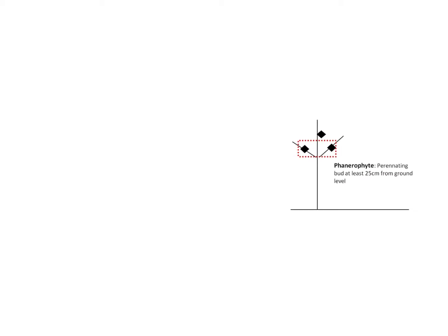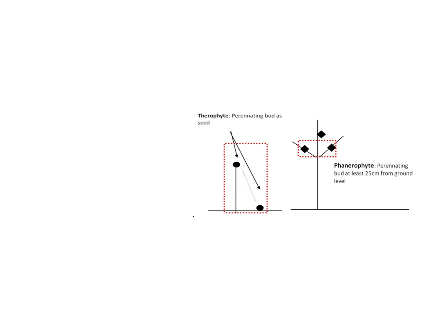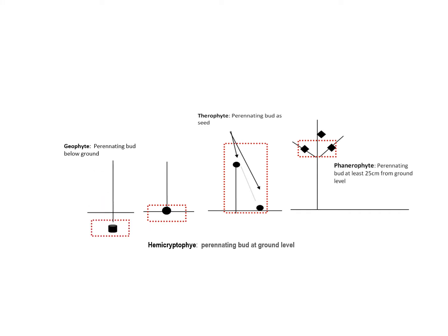In the phanerophyte lifeform, the perennating buds are at least 25cm from the ground level. In the therophyte lifeform, the perennating buds are set as a seed. In the hemicryptophyte lifeform, perennating buds are at ground level. And in the geophyte lifeform, the perennating bud is below the ground.